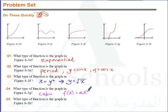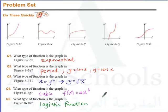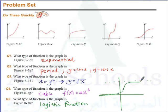Question 5: what type of function is the graph in Figure 8-3H? This is similar to the logistic function. A logistic function has the property of an exponential function, and then it levels off — it meets a certain asymptote and has a point of inflection. So it's a logistic function.